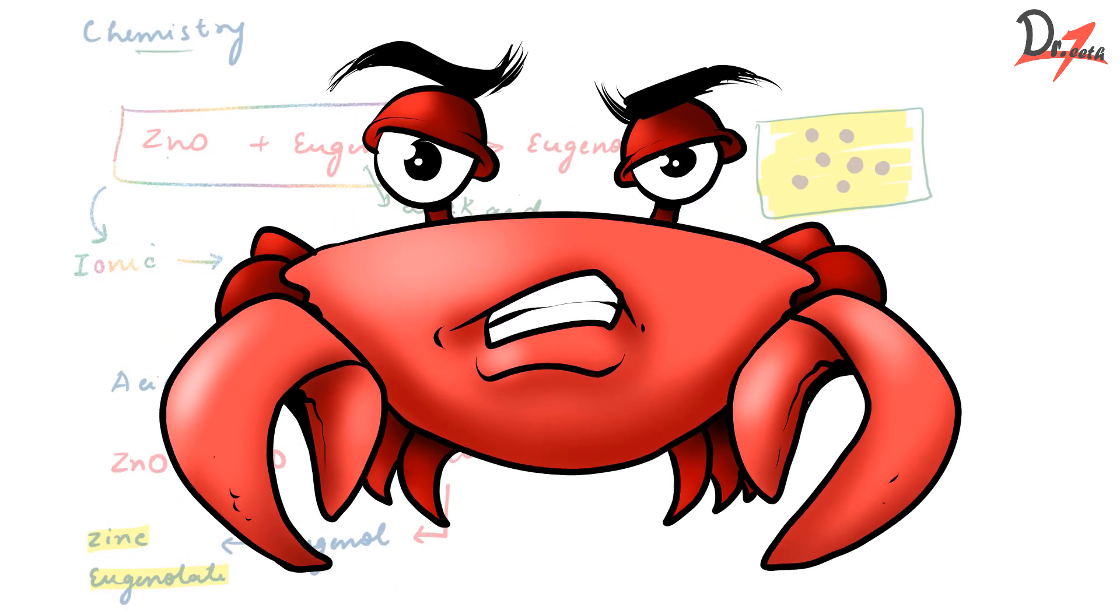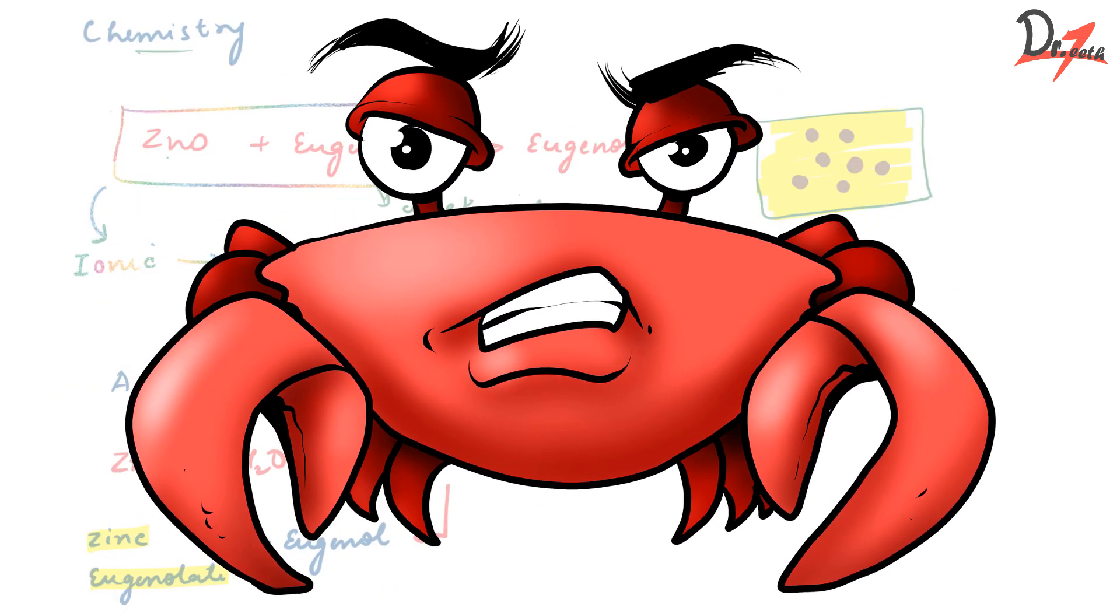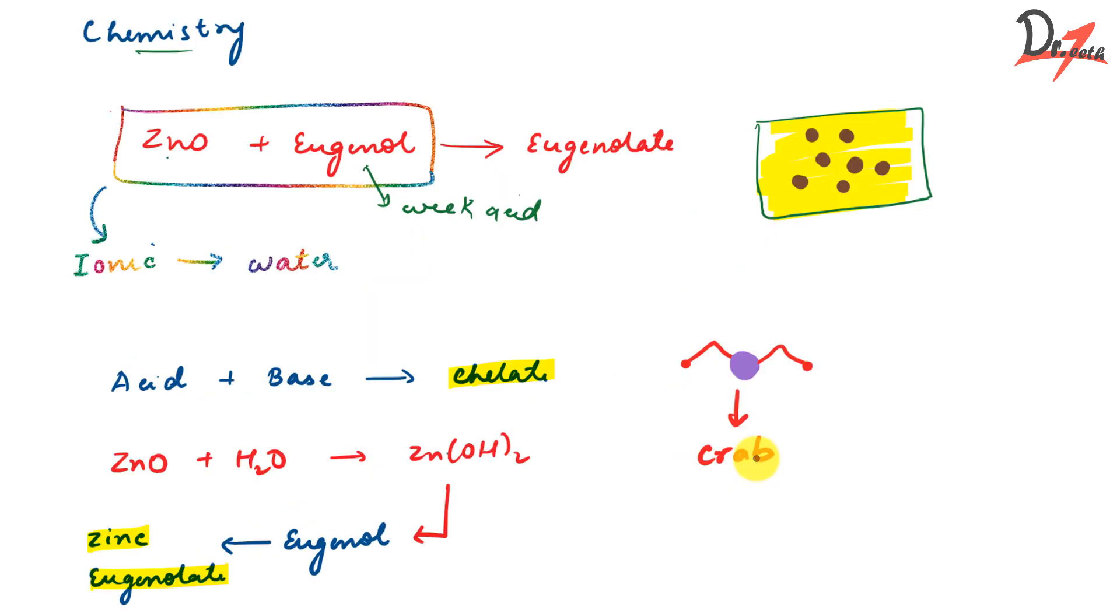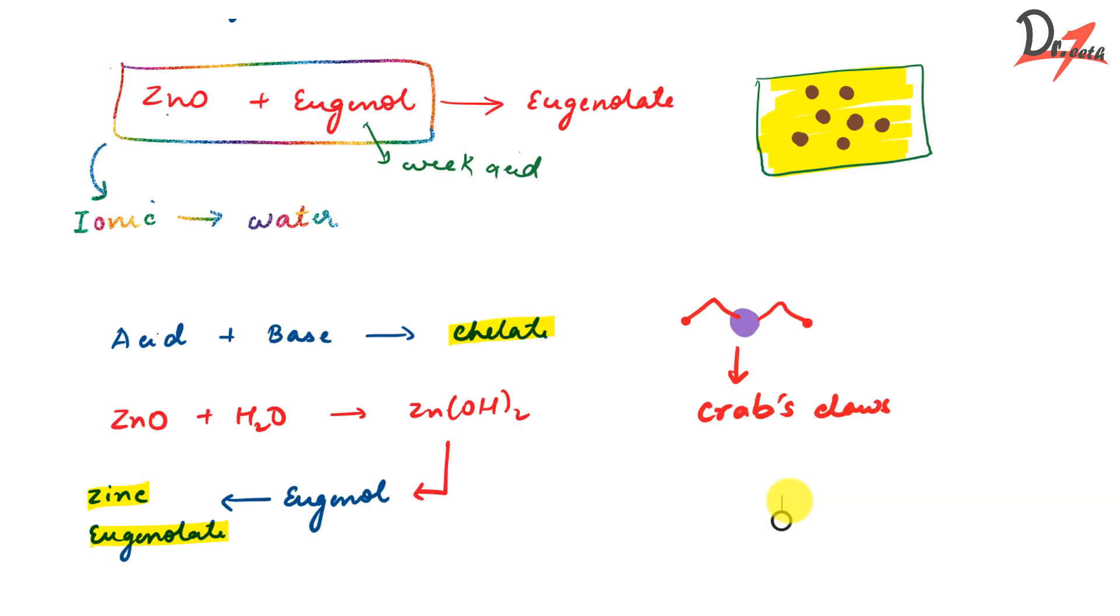Have you seen a crab, the claws or the legs of the crab? So that is a chelate, that refers to a chelate. So we can imagine this structure as a central zinc atom, which is held by two eugenol claws. That is why it is called a chelate compound.